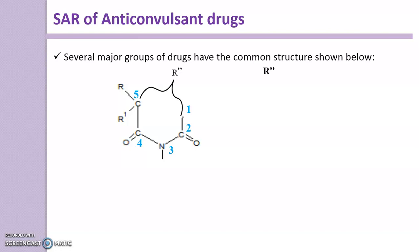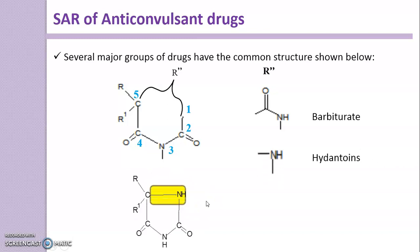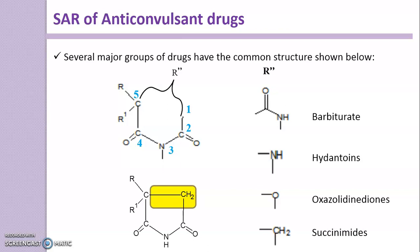If R' is C=O-NH, the compound category is barbiturates, which contain a C=O-NH group. If R' is simply NH, the compound formed is a hydantoin. If the bridging atom is oxygen, the compound is an oxazolidine-2,4-dione. If the bridging atom is CH2, the compound category is succinimides. These are the major groups used as anticonvulsants.